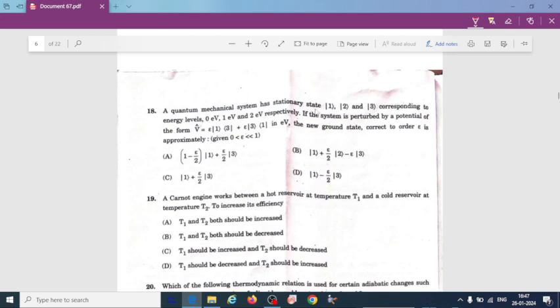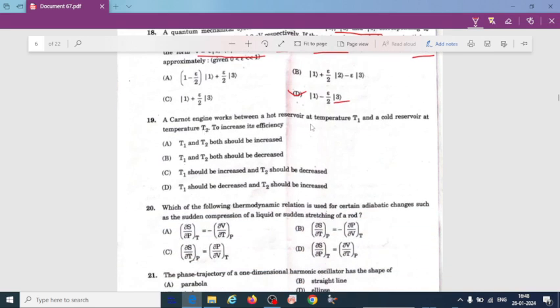The quantum mechanical system has three stationary states corresponding to energy eigenvalues 0, 1, and 2 electron volt. If the system is perturbed by a potential of the given form in electron volt, the new ground state corrected to epsilon is approximately ket of 1 minus epsilon divided by 2 ket of 3. A Carnot engine works between a hot reservoir at temperature T1 and a cold reservoir at temperature T2. To increase its efficiency, option C, T1 should be increased and T2 should be decreased.